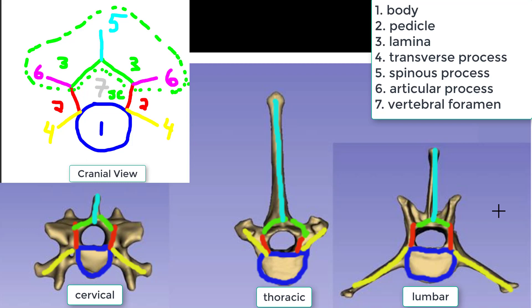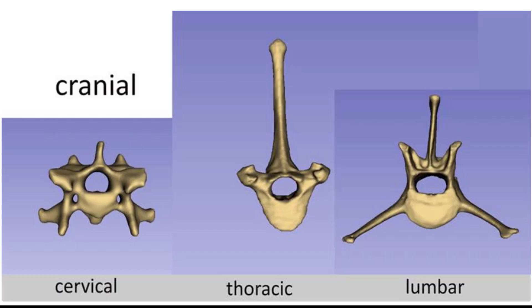The articular process by definition comes off where the pedicle and lamina meet. These are the articular processes of the lumbar, the thoracic — again where pedicle and lamina meet — and the cervical, which are larger but still at that same junction. Finally, we draw in the clinical lamina, which includes the anatomical lamina, articular processes, and spinous process — giving us a clear picture of what's removed during a laminectomy.